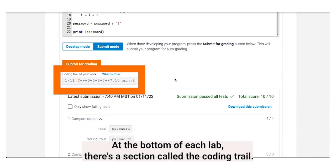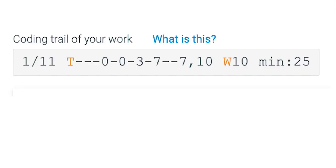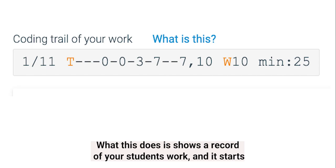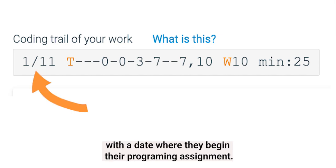At the bottom of each lab, there's a section called the coding trail. What this does is shows a record of your students' work, and it starts with a date where they began their programming assignment.